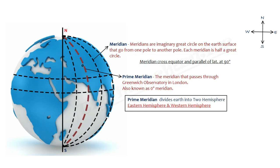So this prime meridian divides Earth into two hemispheres: Eastern Hemisphere and Western Hemisphere.